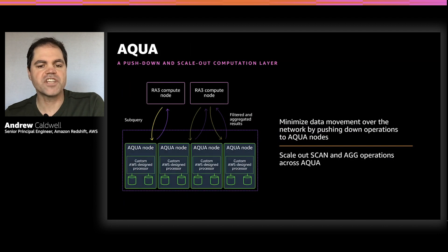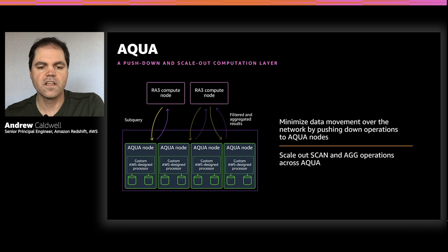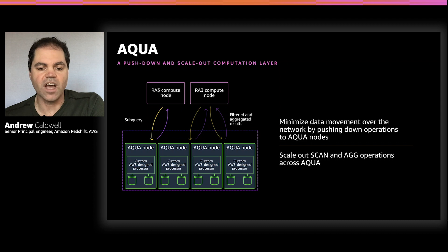Aqua acts as a push-down and scale-out computational storage layer that sits below your Redshift cluster. Aqua caches your hot Redshift data, but it's not a traditional cache because it isn't used that way. Instead of a block fetch interface to move data from remote storage to your cluster — which can create a network bottleneck — each Redshift compute node sends the data-reducing parts of your queries, the filters and the aggregations, to the Aqua nodes where they are executed. Scans are easily parallelized, and scans and aggregations are data reduction operators, which removes the network bottleneck since we send back only the results.